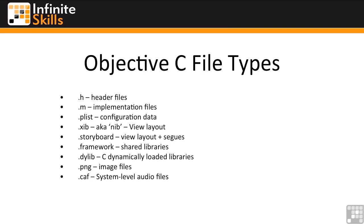Building applications for iOS, there are a number of different file types that you'll see in practically every Xcode project. Header files have a .h extension. They include the definition of the public interface for your classes, as well as the definition of any protocols and categories your class exposes. You can think of protocols as similar to interfaces in C Sharp and Java, and categories are a feature unique to Objective-C.